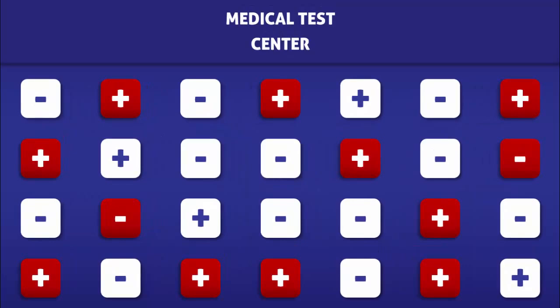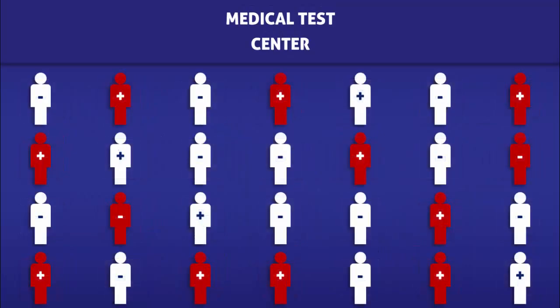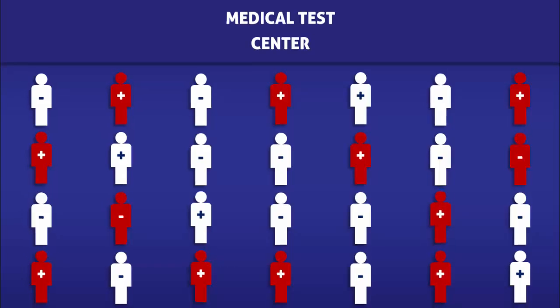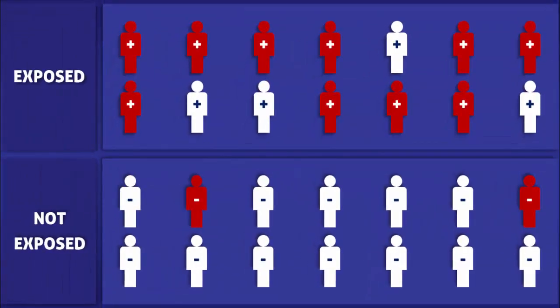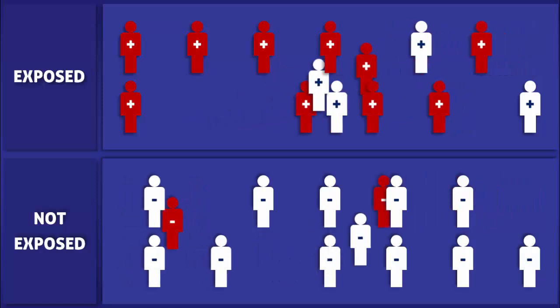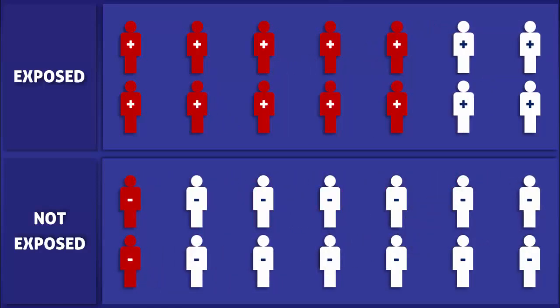To help us learn how to calculate the attributable risk, we are going to imagine that a group of people were exposed to a risk factor. The plus signs signify those who were exposed, whereas the minus signs signify those who were not. The red character icons represent those who developed the condition, whereas the white icons represent those who did not.